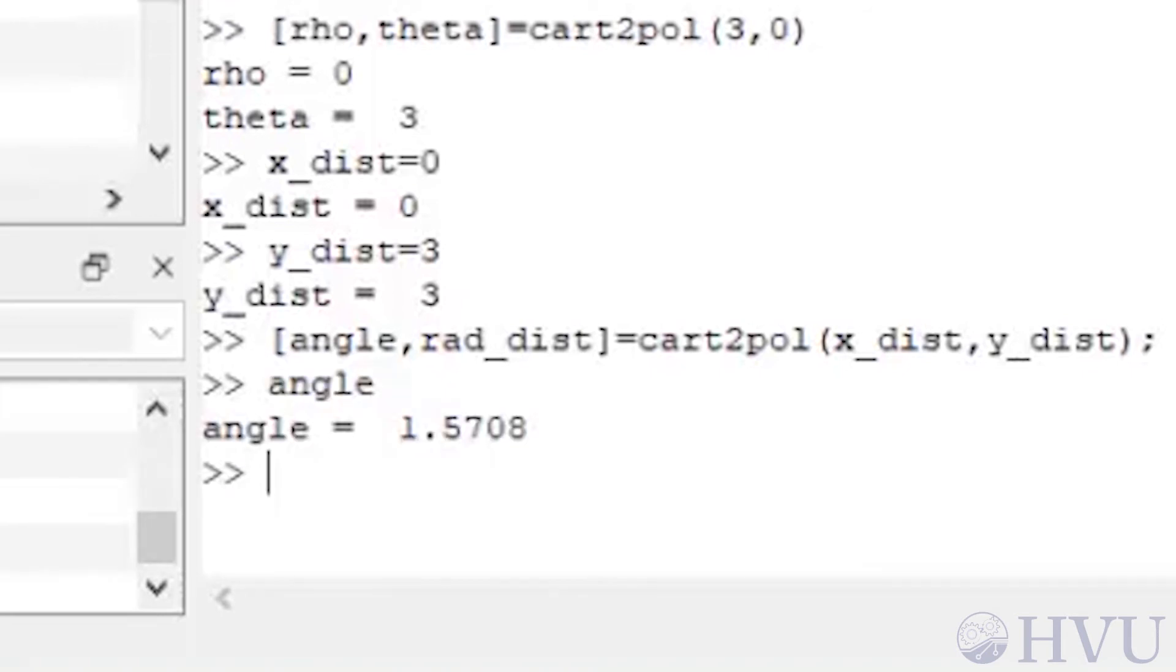To see the angular distance, type angle and press enter. The angle is π/2, which is what we'd expect.